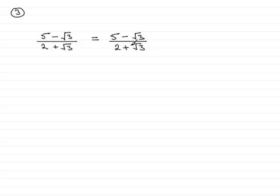And in this case, we've got a plus, so we switch it to a minus, and we multiply top and bottom by 2 minus root 3 all over 2 minus root 3.